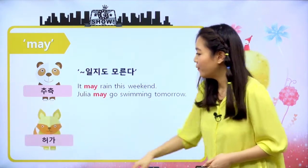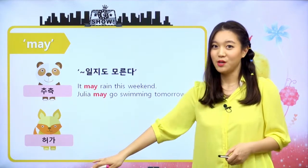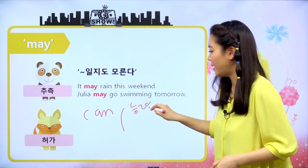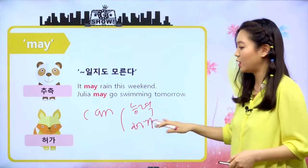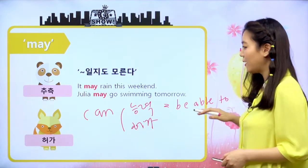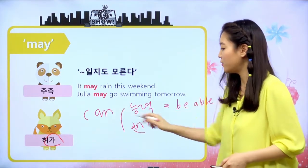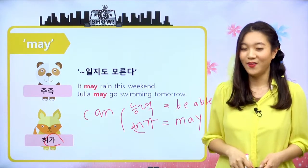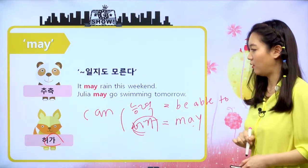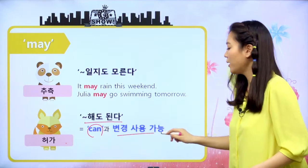두 번째 기능은 허가입니다. 우리 지난 시간에 can이 능력을 나타내기도 하지만 허락이나 허가를 나타내기도 한다고 배웠어요. 능력은 be able to와 같이 쓸 수 있지만 허가는 그렇게 하지 못한다고 배웠죠. 그런데 may도 허가의 뜻이 있어요. 허가일 때 can과 may는 서로 변경해서 사용할 수 있습니다. 해석은 '뭐뭐 해도 된다'이고요.